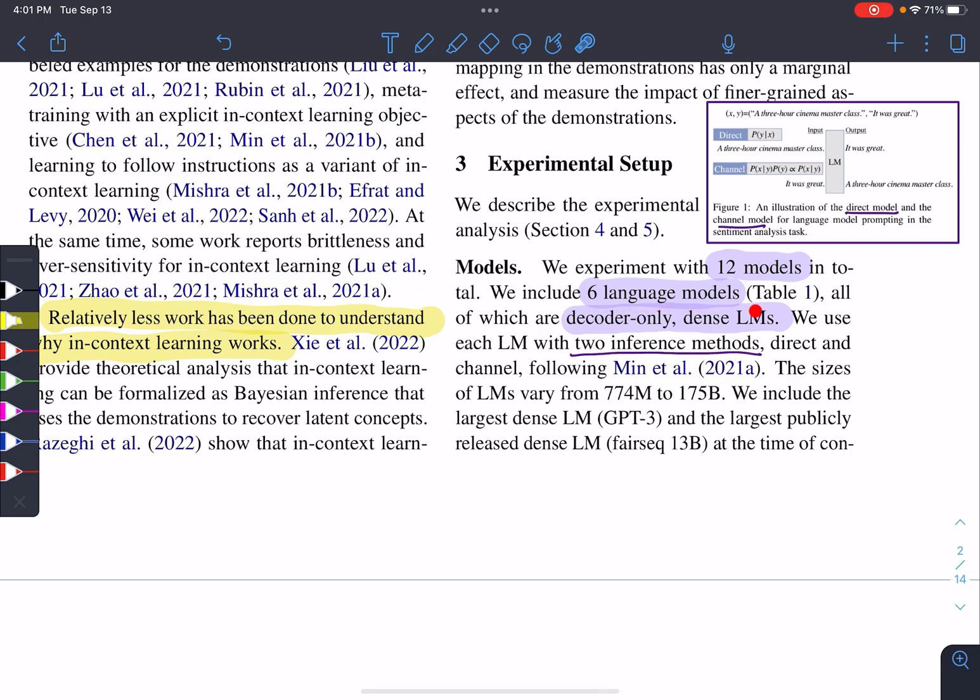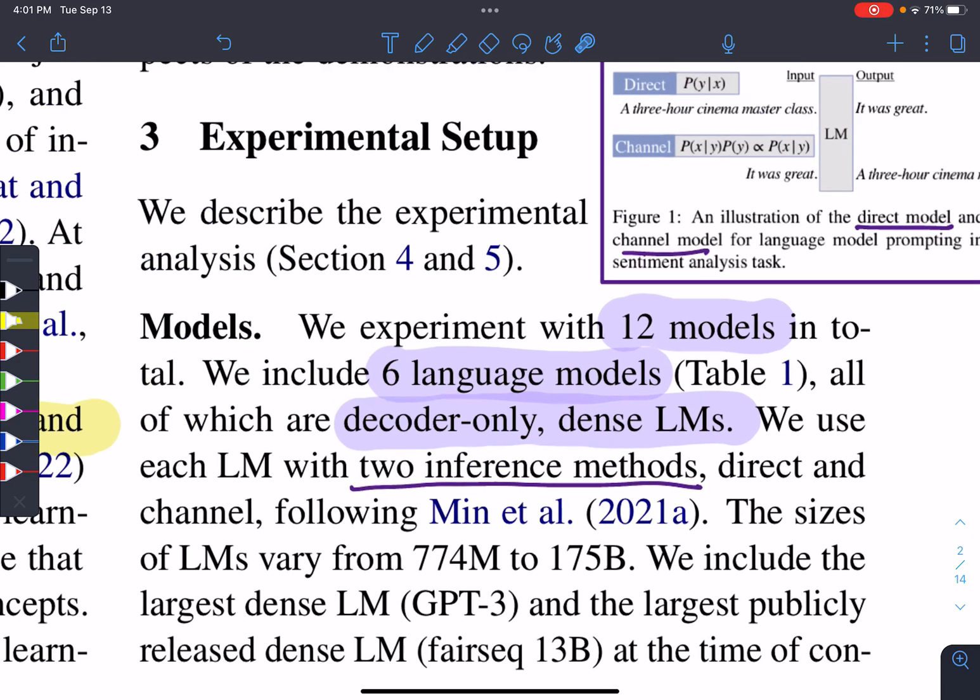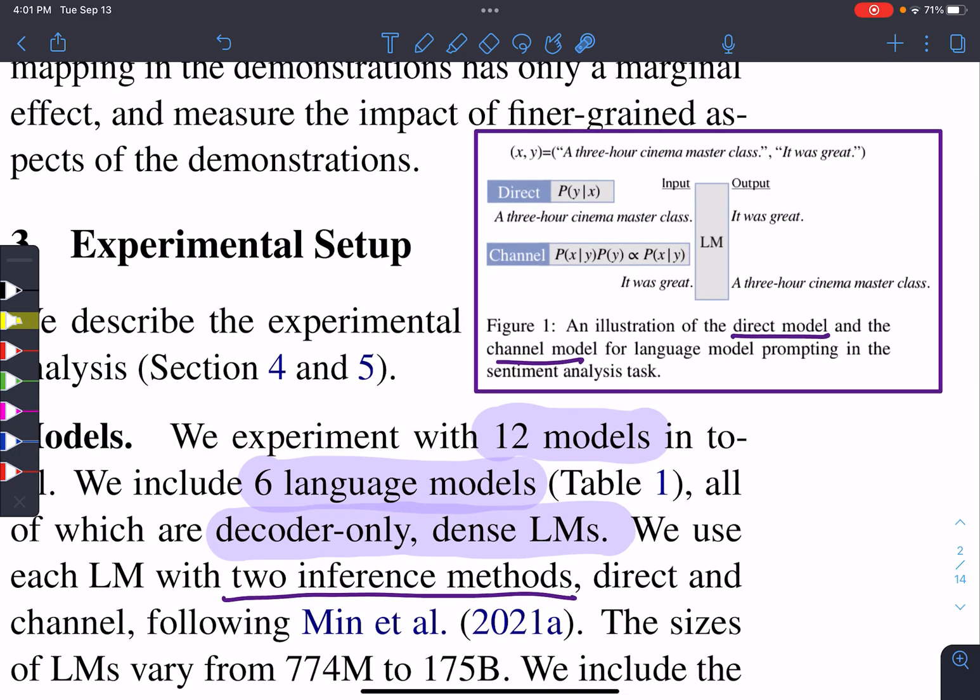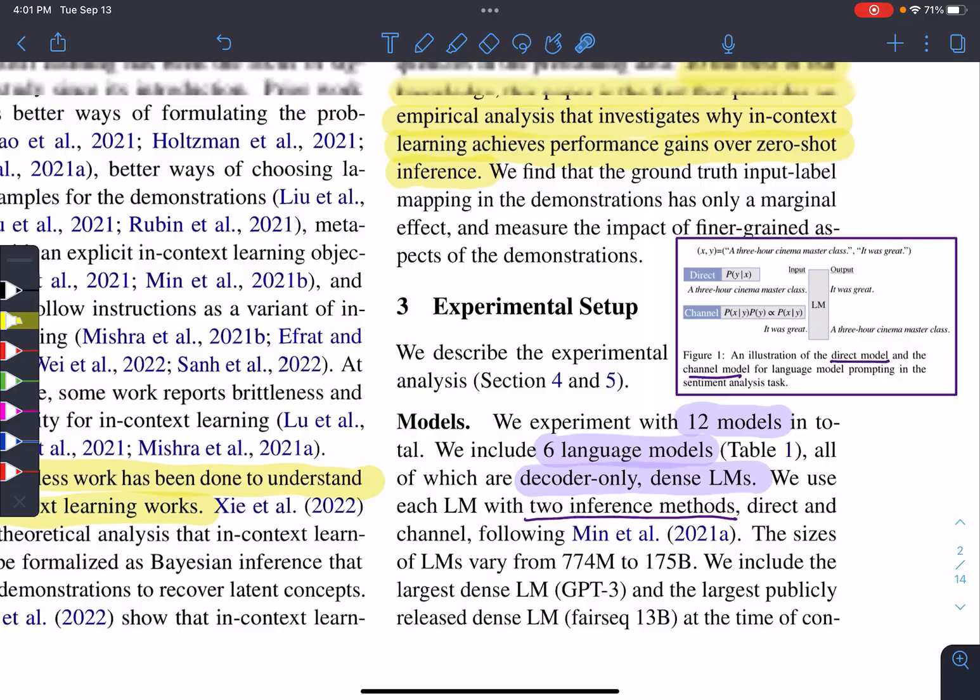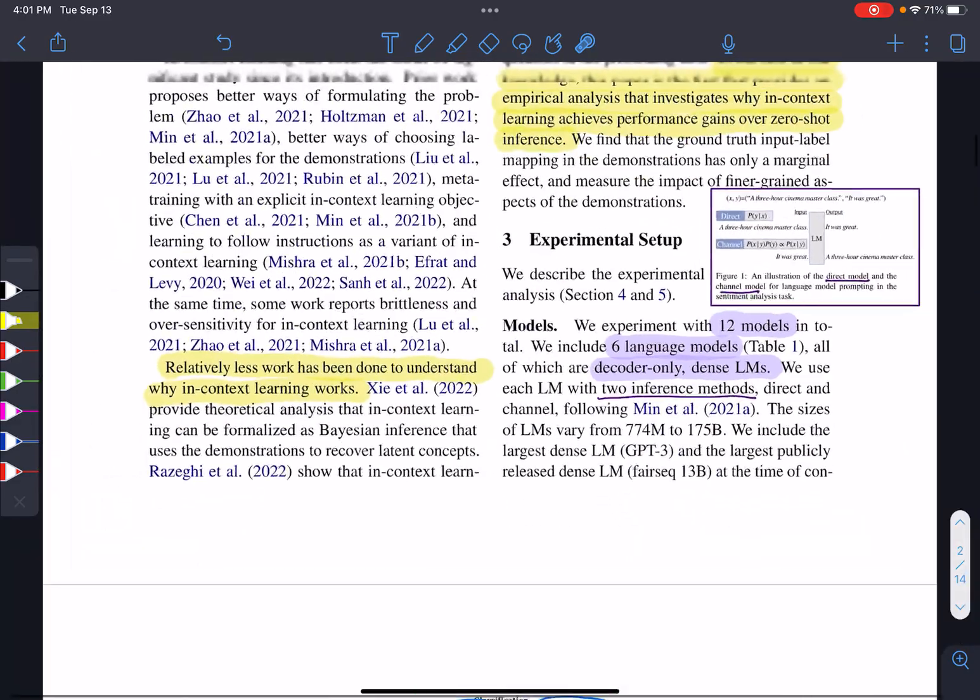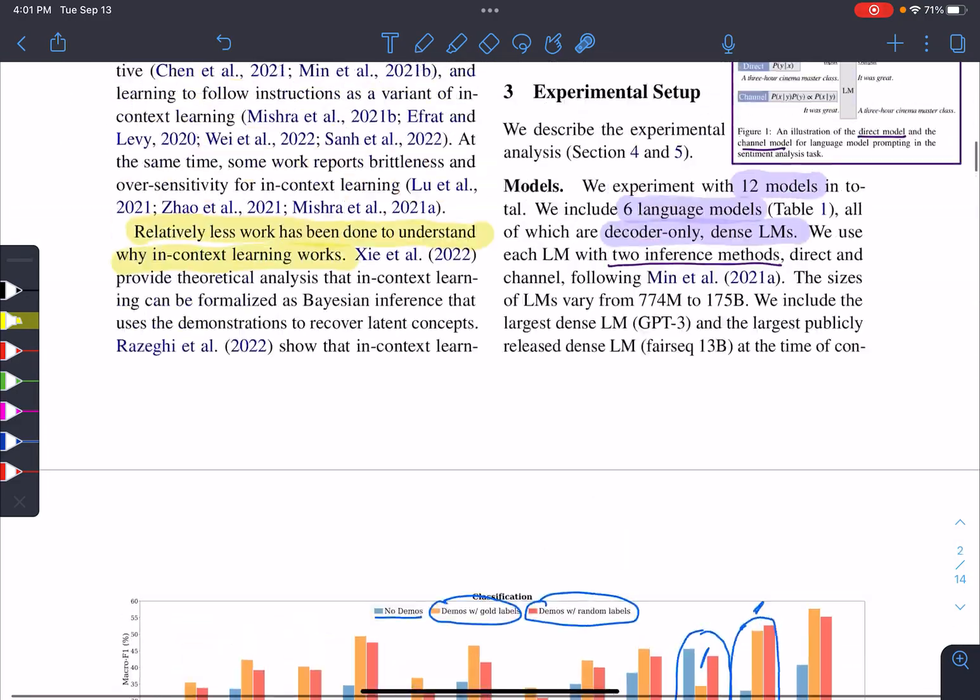They are using six language models and two inference methods for each one of them. These two inference methods look like one is direct model and one is channel model. For a direct model, it's simple, you have an input and you have an output. For channel model, it's the reverse. The output becomes the input and then the model has to generate the input.